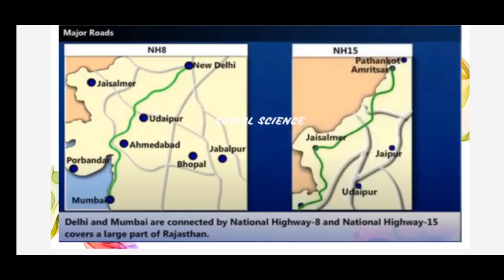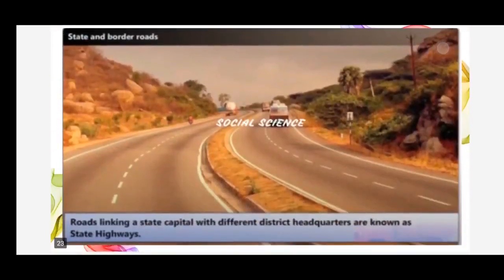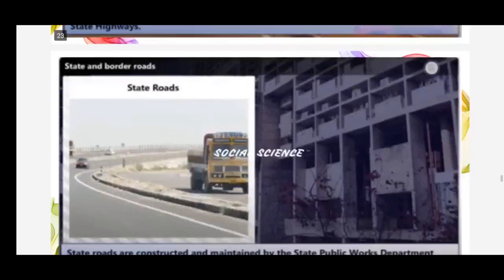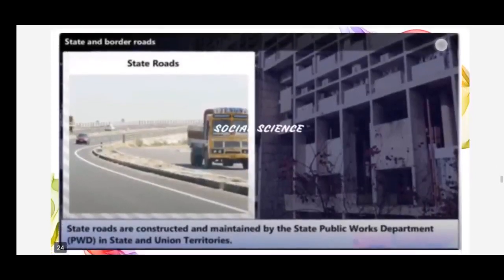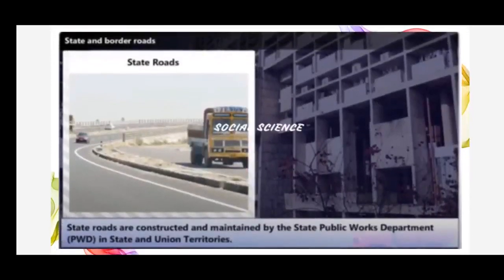Delhi and Mumbai are connected by National Highway Number 8, and National Highway Number 15 covers a larger part of Rajasthan. Roads linking a state capital with different district headquarters are known as state highways. These are constructed and maintained by the state Public Works Departments, or PWD, and also cover union territories.